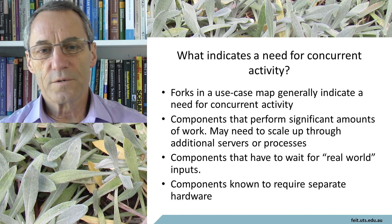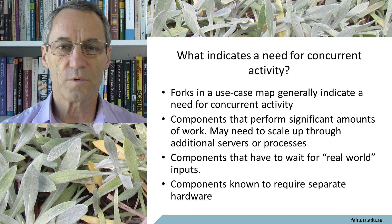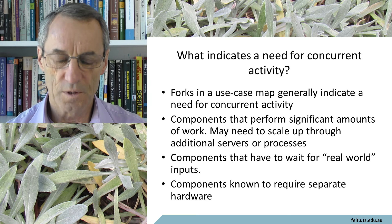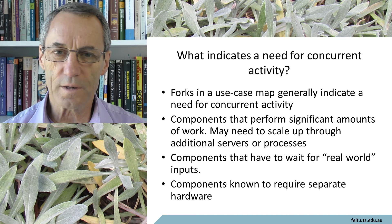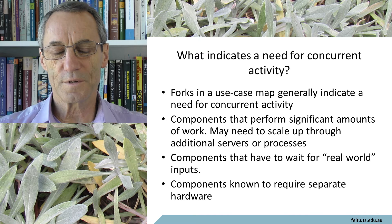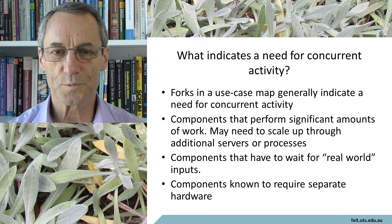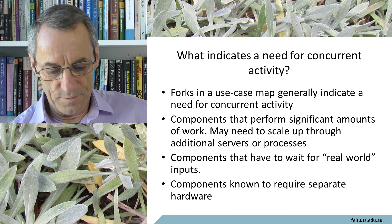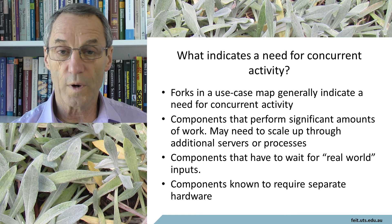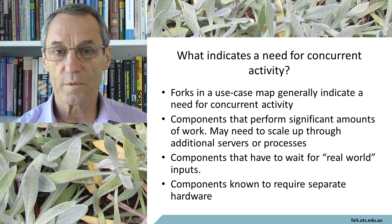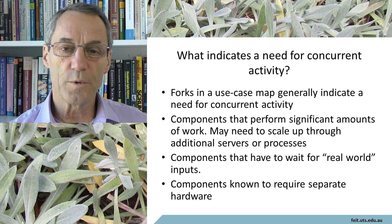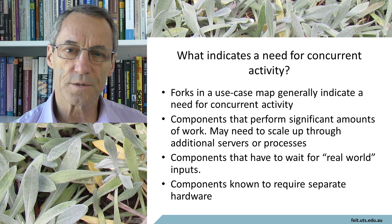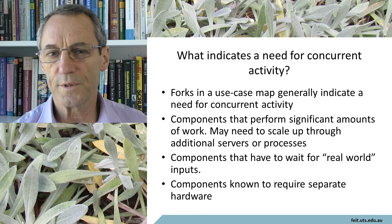What indicates the need for concurrent activity? When looking at an architecture, what flags might suggest something ought to be a concurrent activity? If you've got a use case map with a fork in it, it's quite likely that fork indicates the two ends should be separate and concurrent activities. Components that perform a significant amount of work may need to scale up through additional servers or processes. Components that have to wait for real-world inputs should probably be a separate component. And components which are known to require separate hardware — such as specific device interfaces — may well be a separate component.